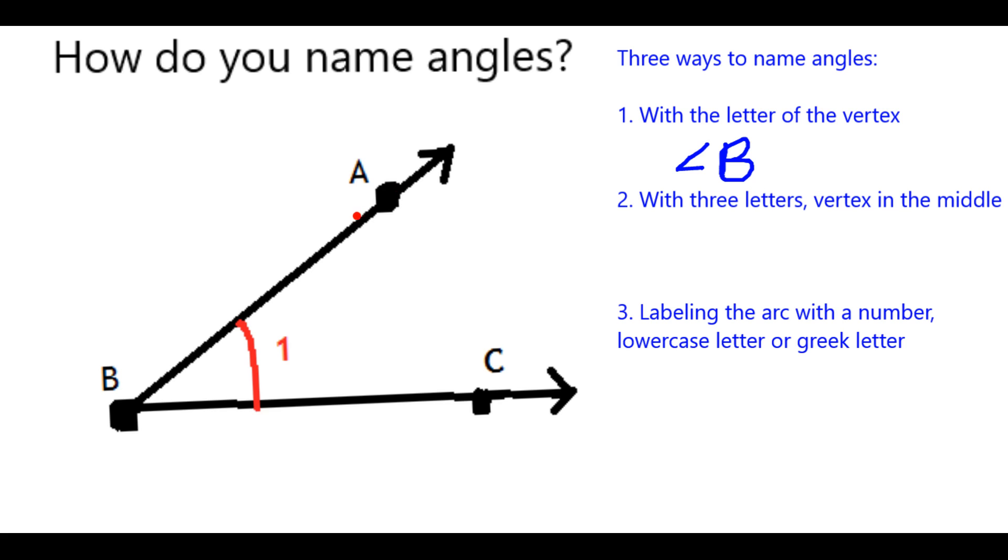But sometimes, you might want to name it with three letters, in case there is potential ambiguity. So you could call this ABC or CBA. Notice, in both cases, the capital letter which represents the vertex, in this case the B, is in the center, and that's crucial when you're naming it.